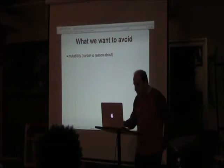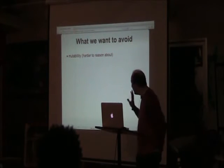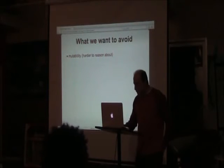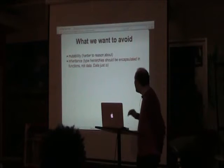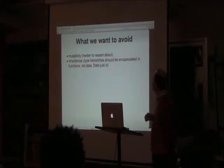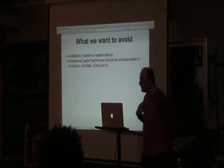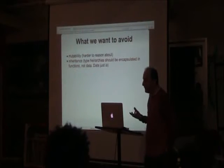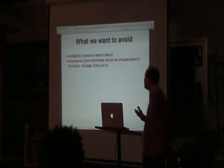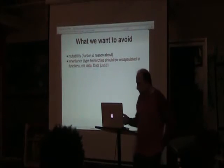In my system I wanted to make mutability a little bit harder — you can do mutability, I'll show you later — and I'm also avoiding inheritance. My philosophy is that inheritance should be encapsulated in functions, not in the data, since relationships are best matched with functions. I consider data to be just a group of values put together with a label.